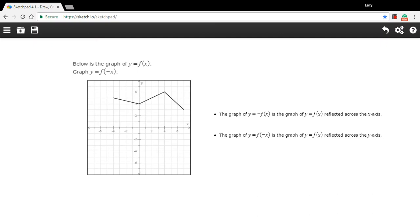In this problem we're being given a graph of a function f(x) and we're being asked to graph y equals f(negative x), and what that is is actually a reflection across one of the axes.